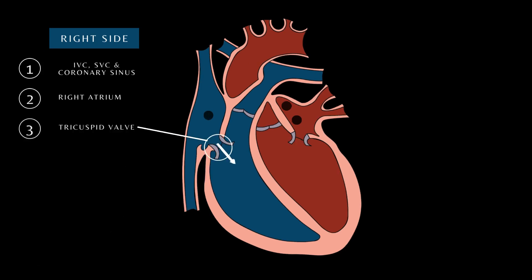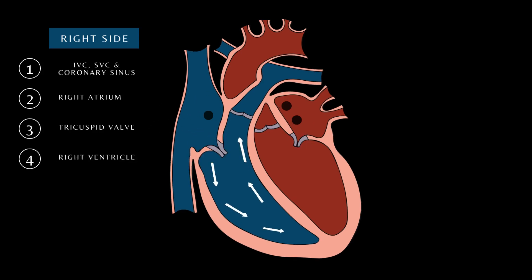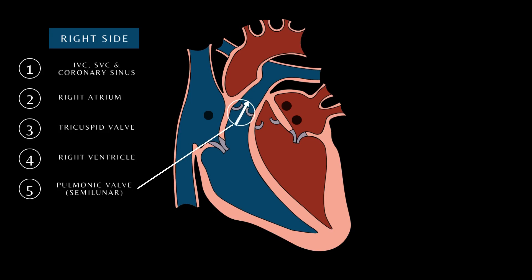Atrial contraction pushes blood through the tricuspid valve and into the left ventricle. Note: during atrial contraction, the tricuspid valve is open and the pulmonic valve is closed. Ventricular contraction pushes the blood through the pulmonic valve and into the pulmonary trunk. During ventricular contraction, the pulmonic valve is open, while the tricuspid valve remains closed to prevent the backflow of blood into the right atrium.